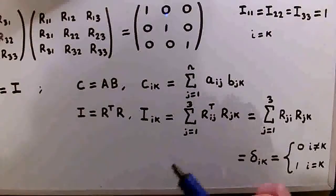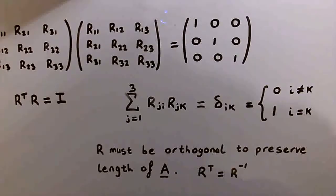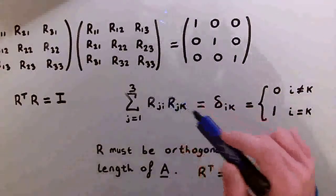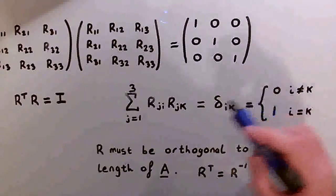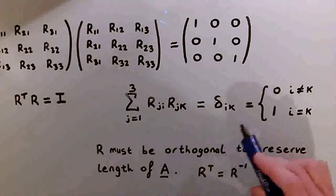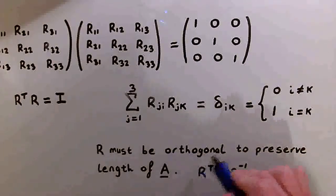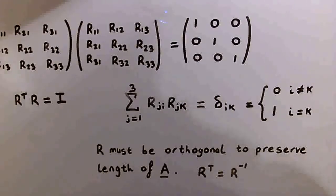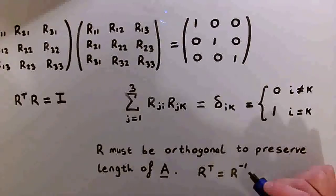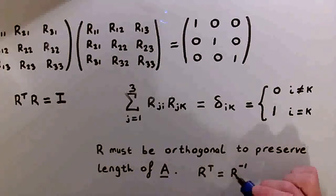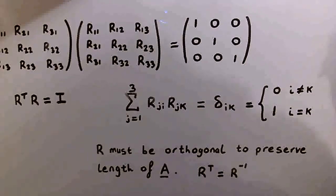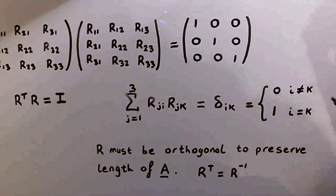In summary, the constraints placed on the rotation matrix to preserve the length of A can be summarized in this equation — the sum of R_ji times R_jk equals the Kronecker delta δ_ik — which is equivalent to saying R must be an orthogonal matrix. The definition of orthogonal is that the transpose of the matrix equals its inverse. That solves problem 1.8B — thanks for watching, and feel free to comment any questions below.